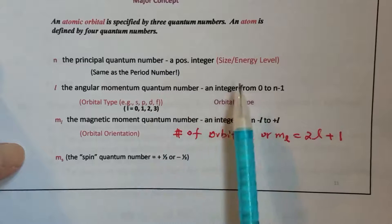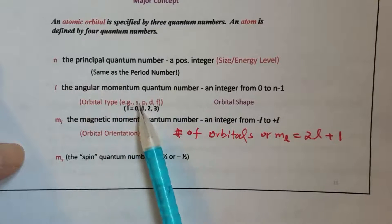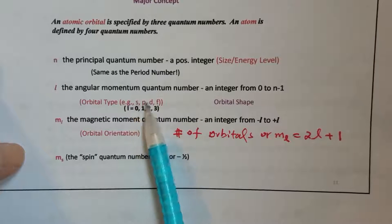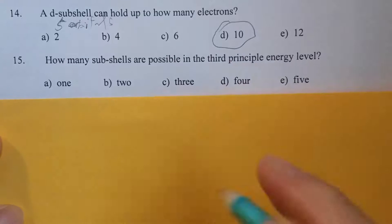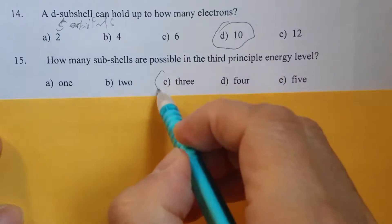So therefore, for n equals 3, you will have s, p, and d. That's three. Three subshells.